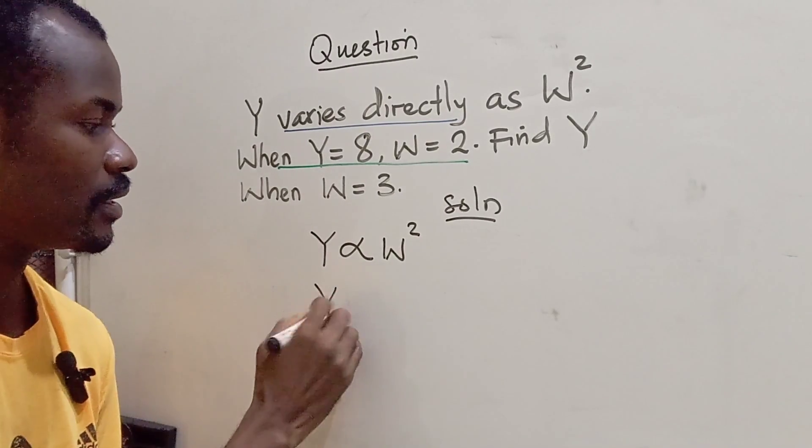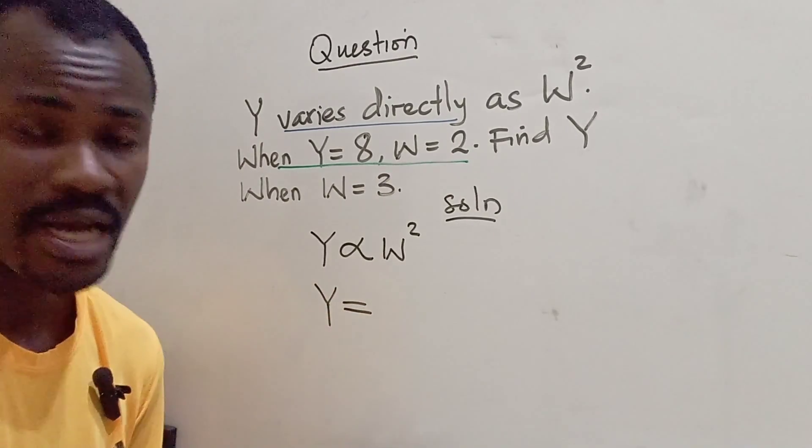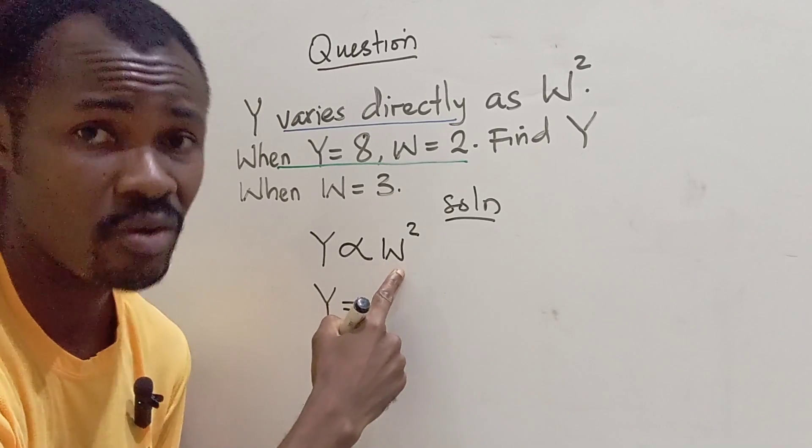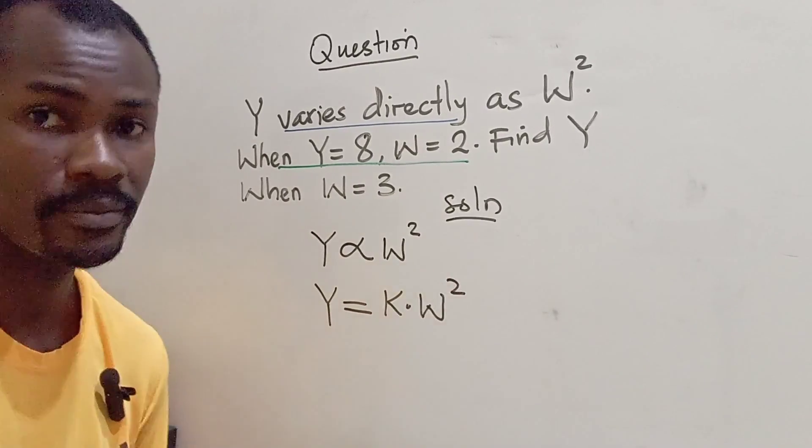Now the next thing is the proportionality sign changes to equals to, and you multiply this side by the constant K. So K times W squared.